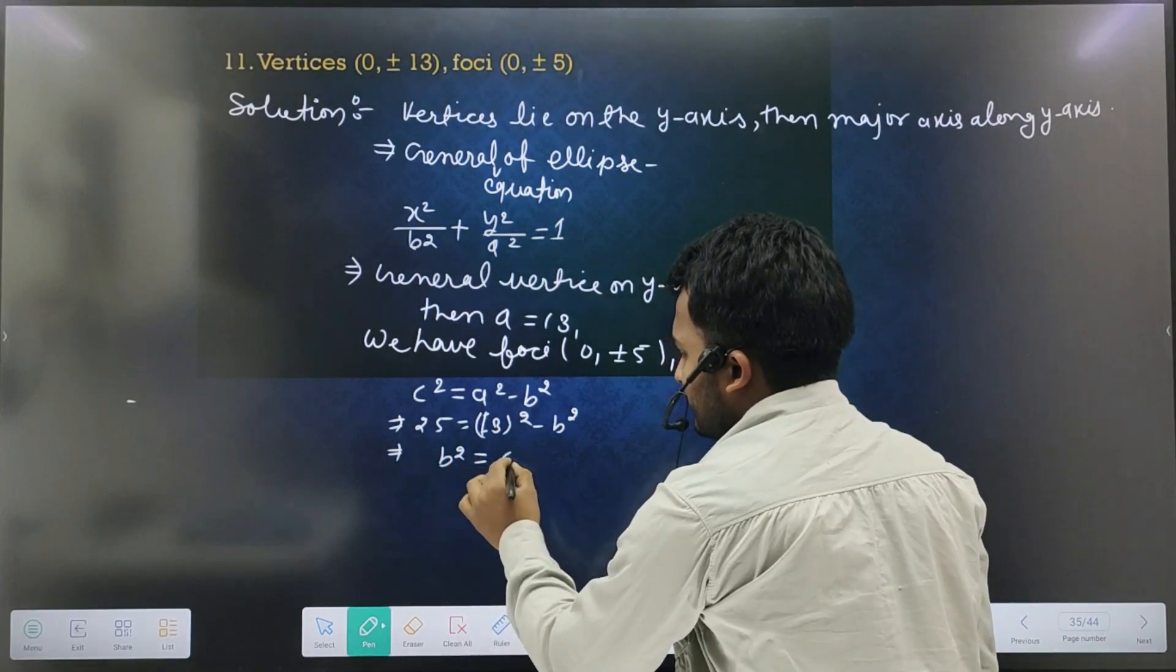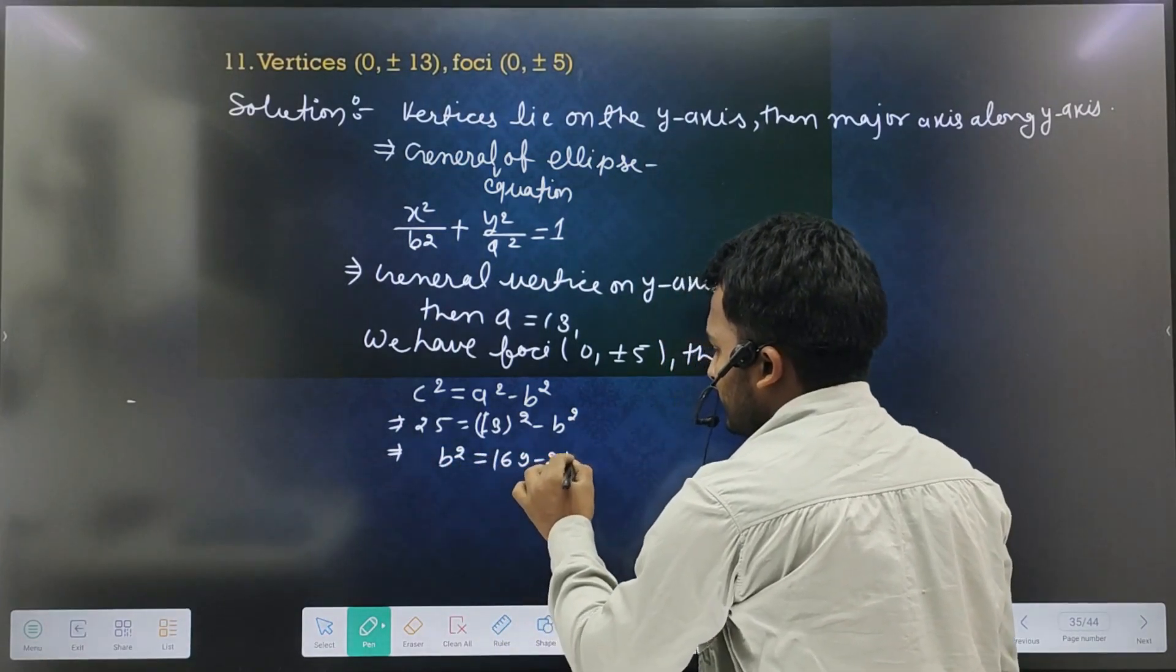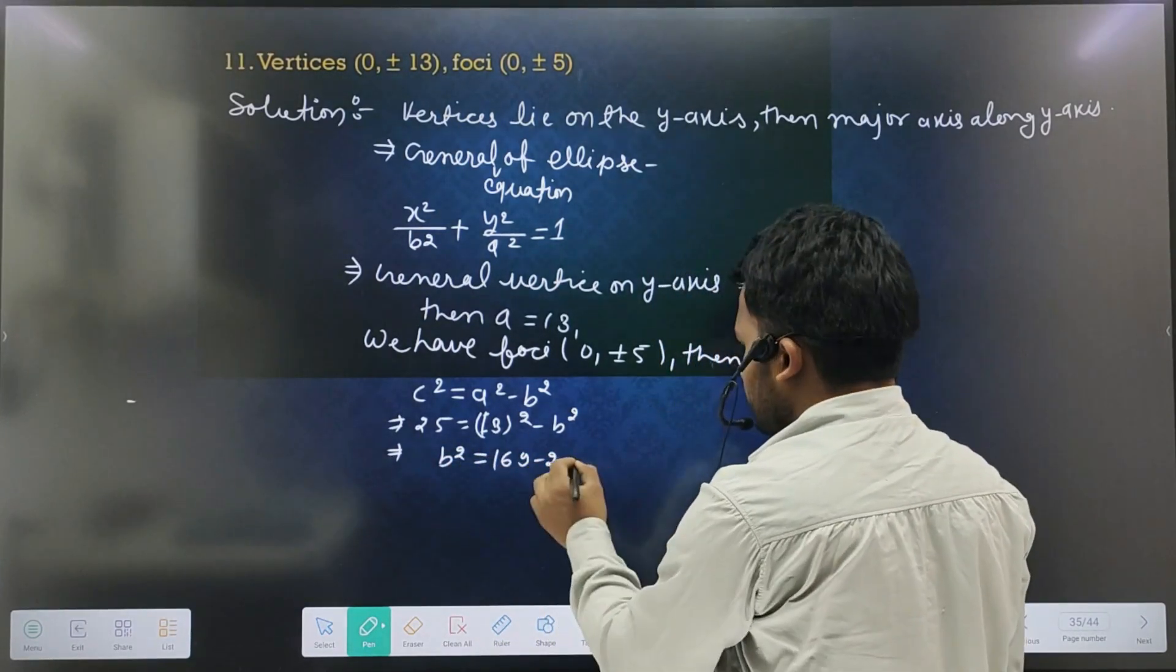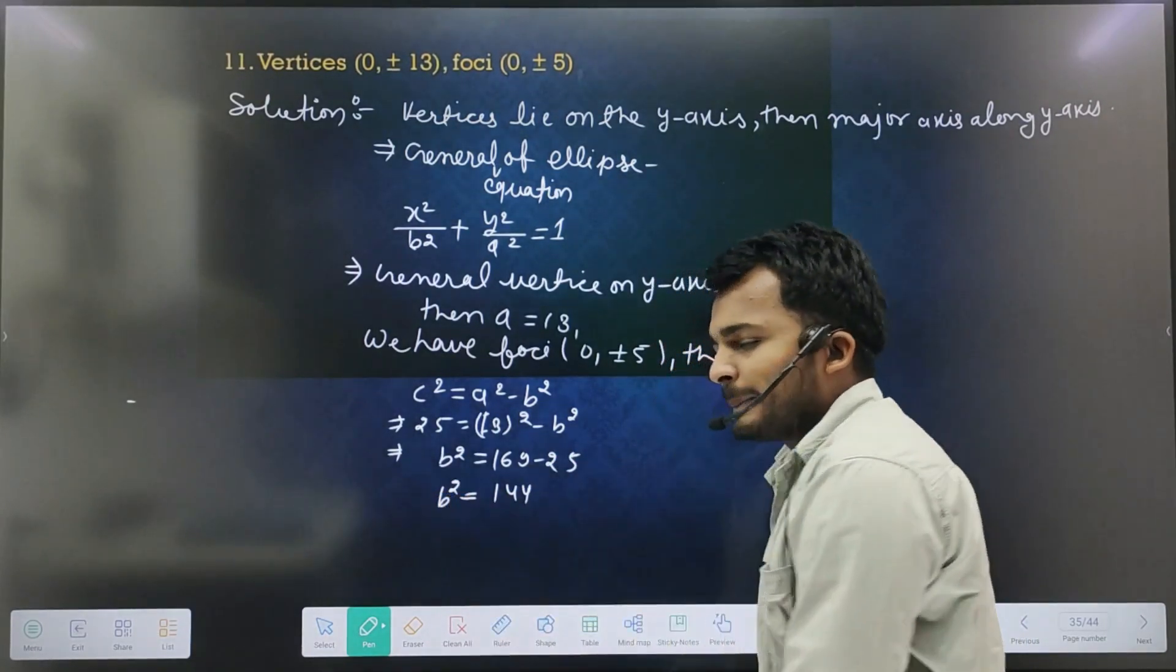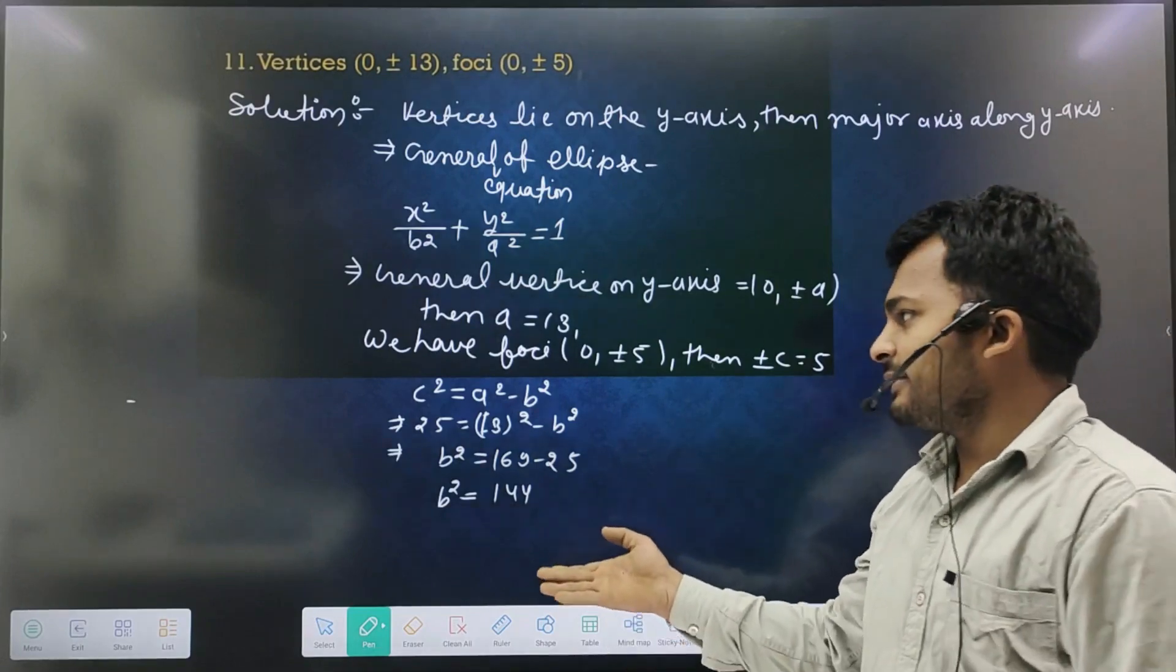b² equal to 169 minus 25. What will come from here? 144 equal to b².